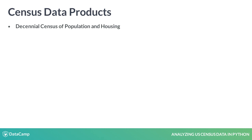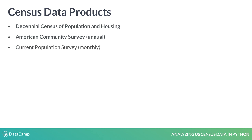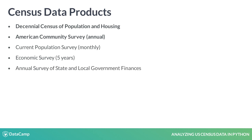In this course, you will also learn about the annual American Community Survey. But once you learn the Census API, you can use it to explore other products, including the Current Population Survey, a monthly survey used to calculate official unemployment figures; the Economic Survey, a survey of businesses conducted every five years; or the Annual Survey of State and Local Government Finances, which can be used to study taxes and service provision by subnational governments.